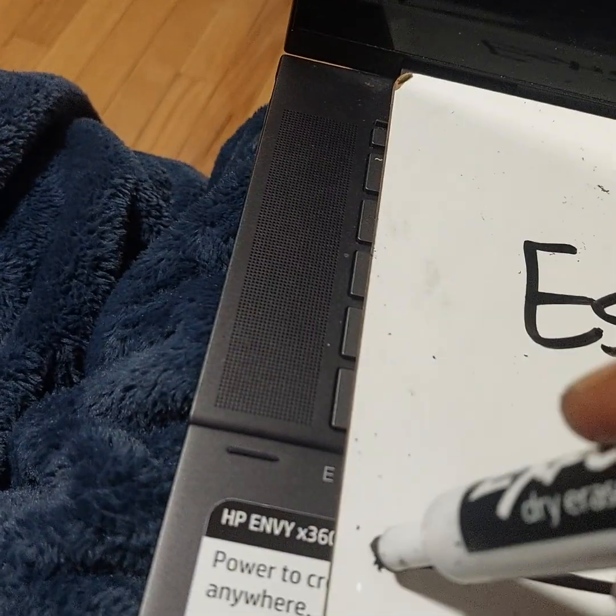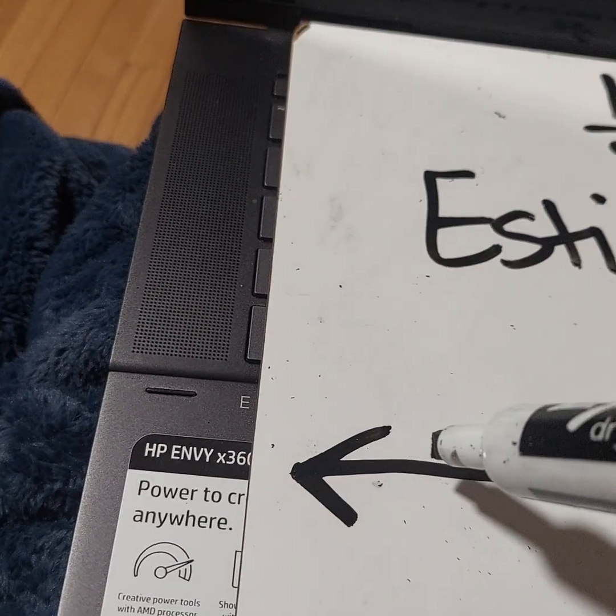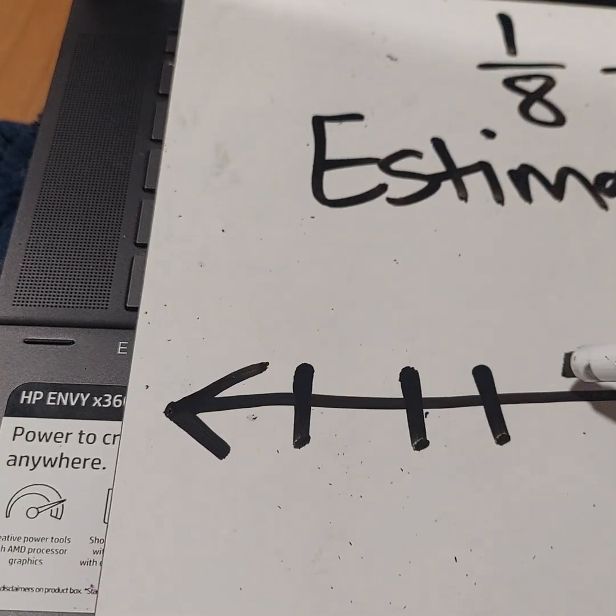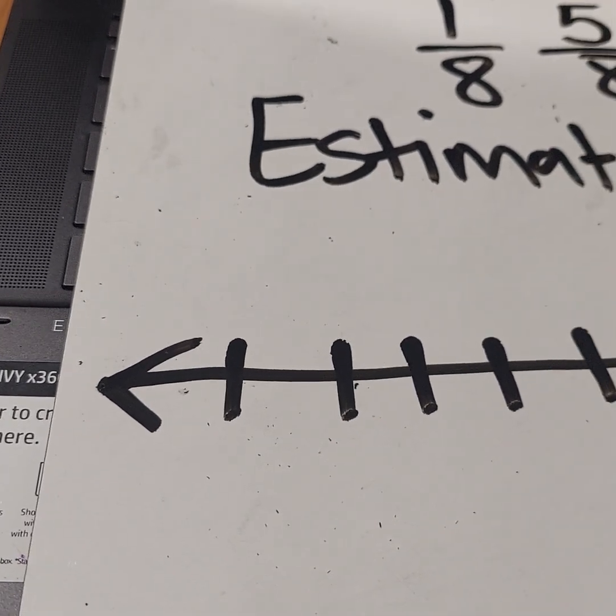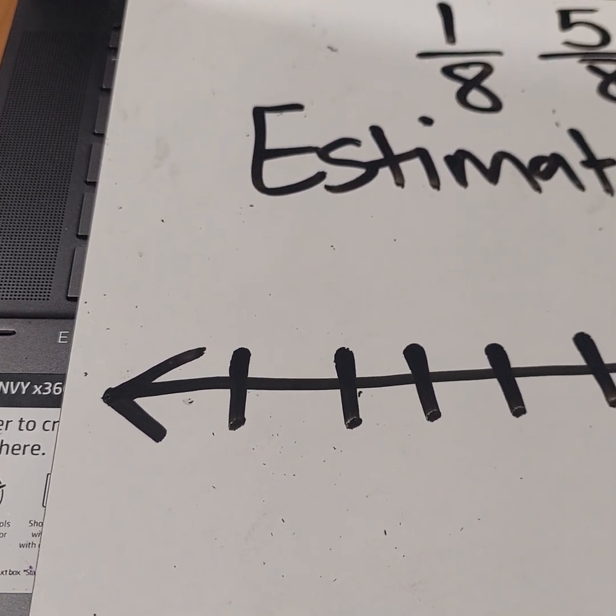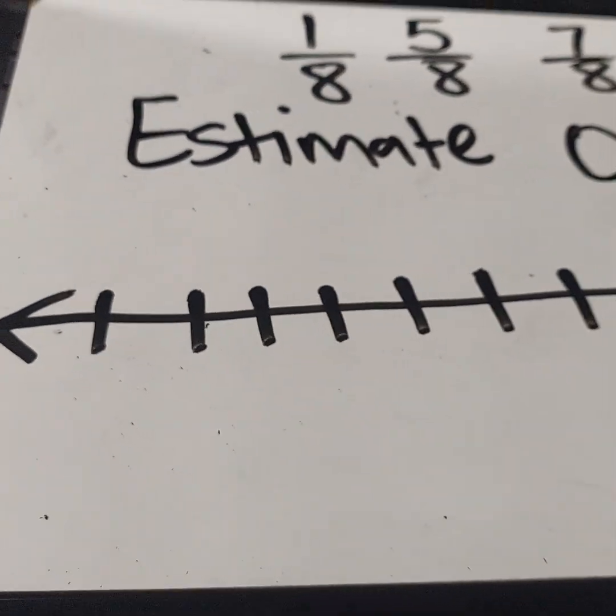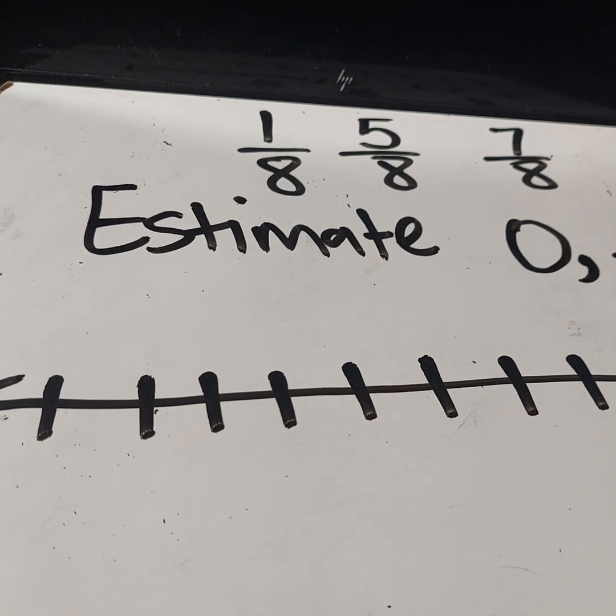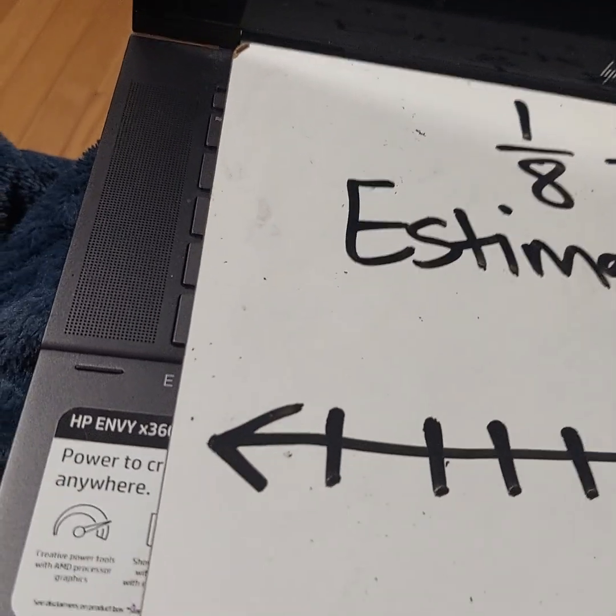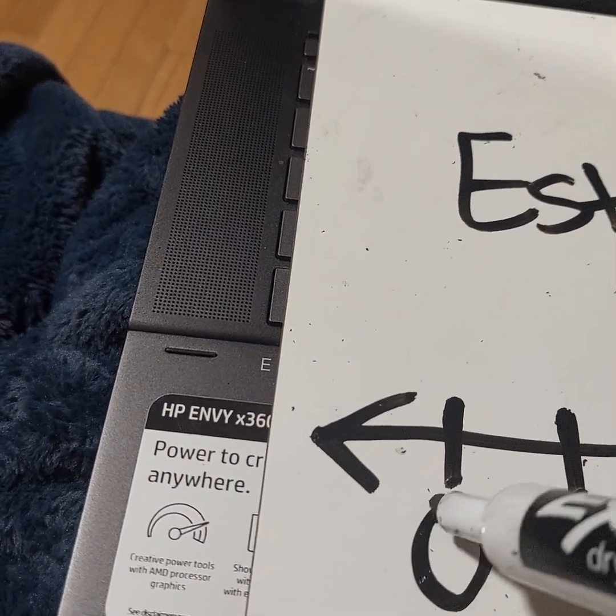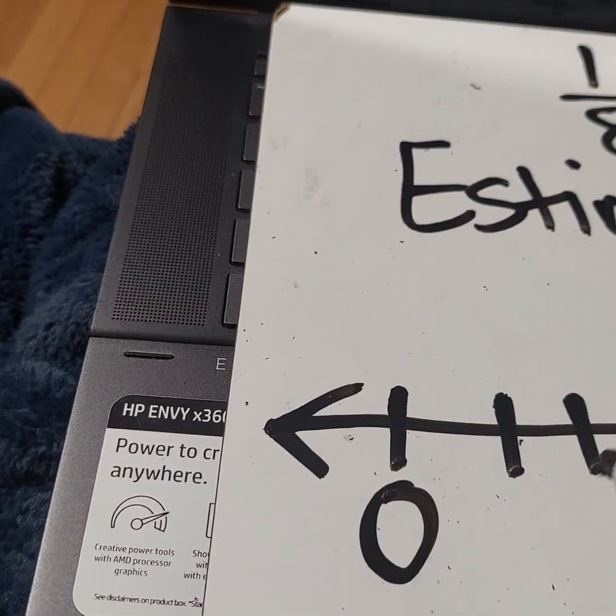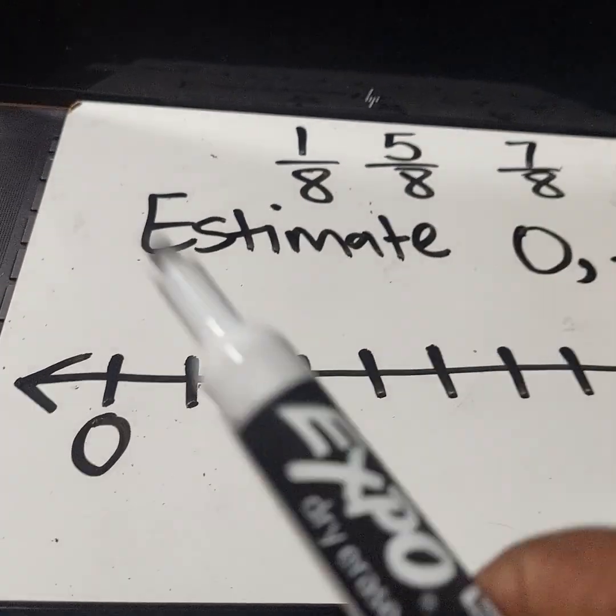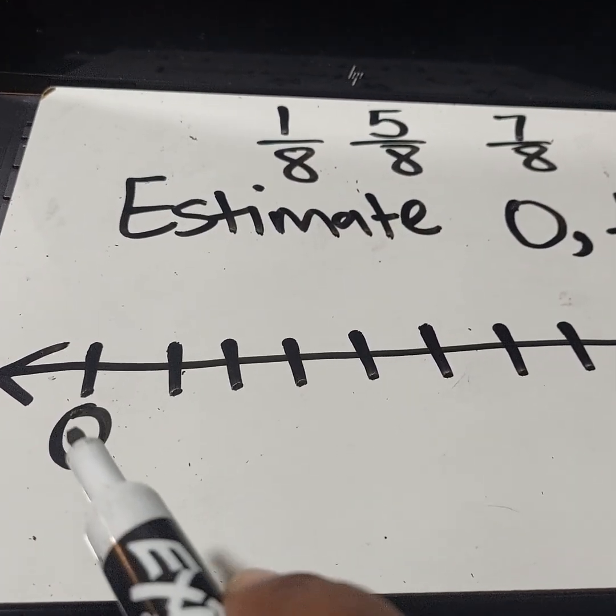Whenever you do a number line or create a number line, you're going to always start with zero. Please do not forget that. If you look on a ruler, every ruler always starts with zero. So when you are counting, it's basically increments. We're going to start by labeling my number line. This is going to be zero, my first number. We said there's going to be eight equal parts, but I need to make sure when you start counting, do not start with zero please. You're going to start with this number, number one right here.